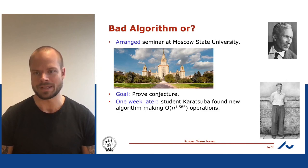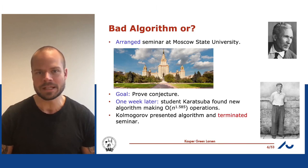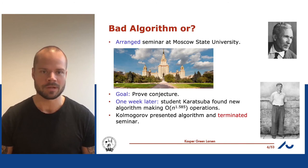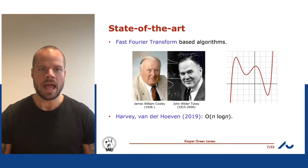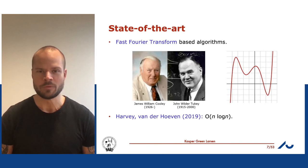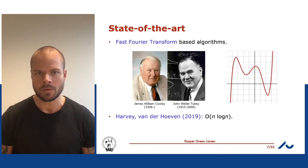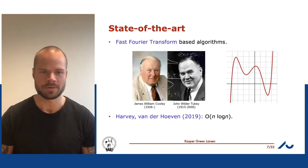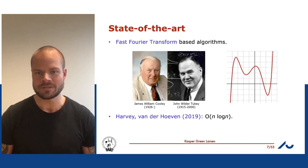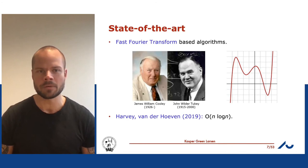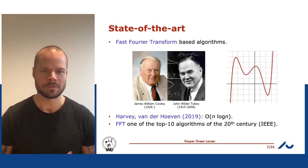Kolmogorov presented this algorithm at the next seminar meeting and then terminated the series, because the conjecture was clearly false — multiplication could be done significantly faster than quadratic time. Fast-forwarding to today: just last year, Harvey and van der Hoeven gave an algorithm for multiplying two n-bit numbers in O(n log n) time — specifically a Boolean circuit of size n log n. This is the state of the art and is based on the Fast Fourier Transform by Cooley and Tukey, named one of the top 10 algorithms of the 20th century.